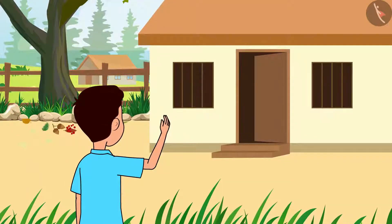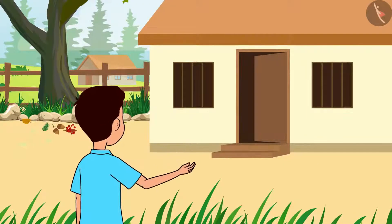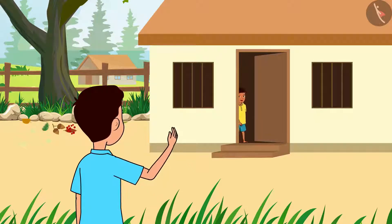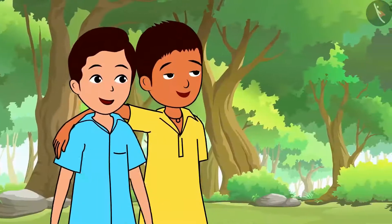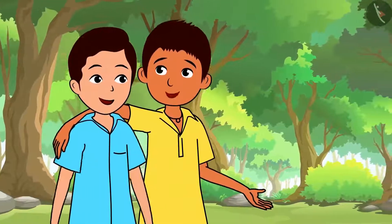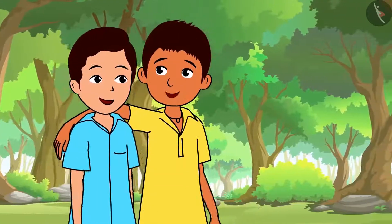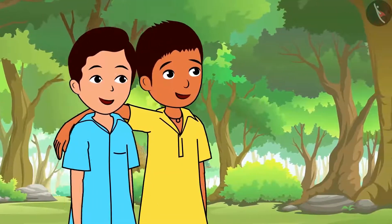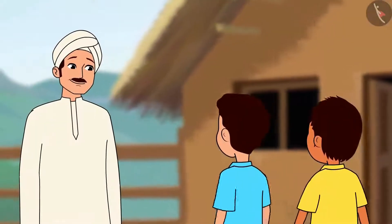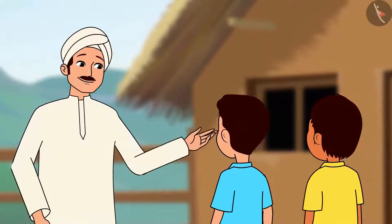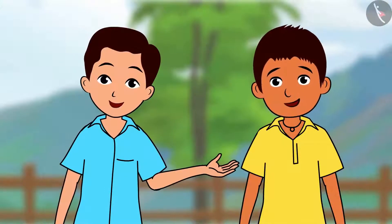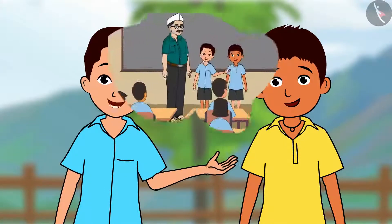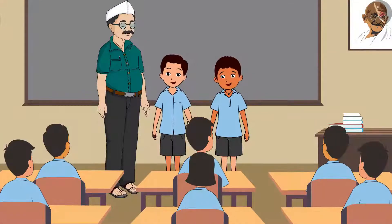Ratan, hurry up. Let us go to Kaka's house. He promised to complete the story of his seed today and asked us to visit him this evening. I also want to know how the same kind of trees and plants grow at different places. Both of you have come back from school. We shared the information about seeds in our science class which you gave us yesterday.